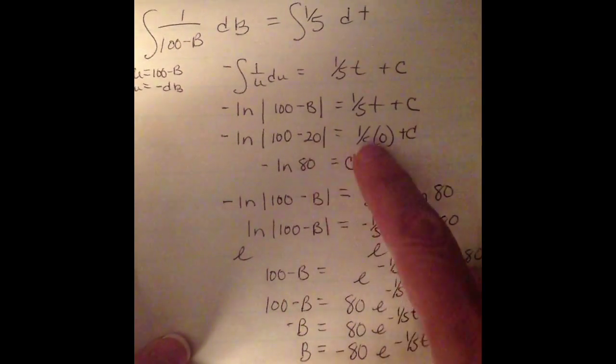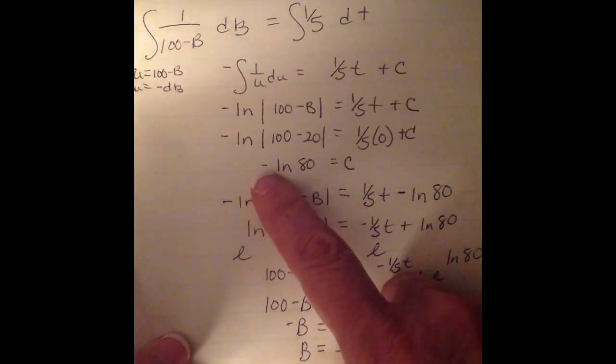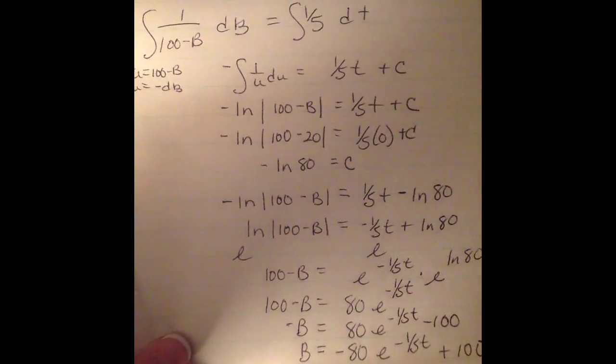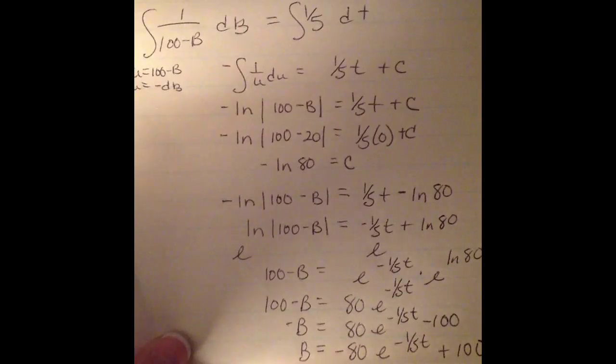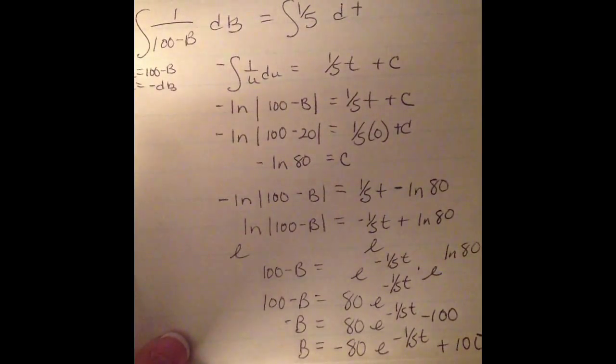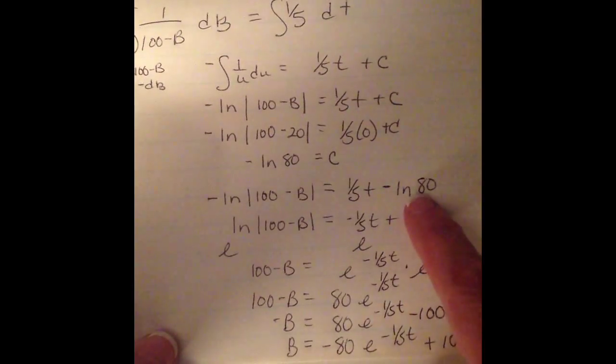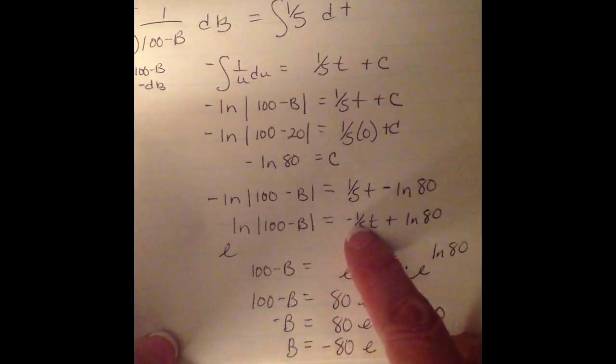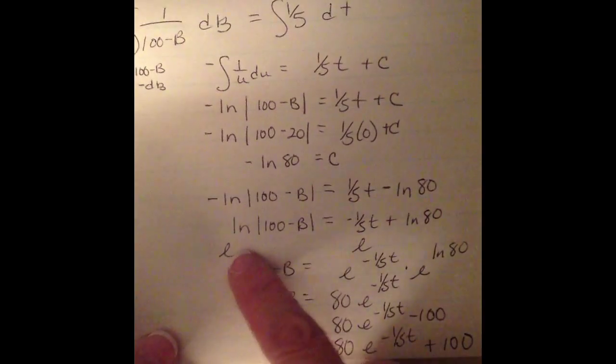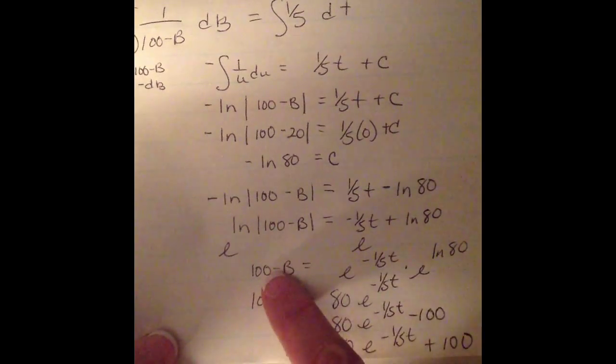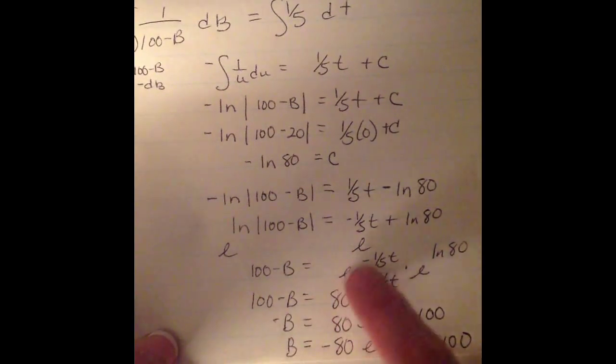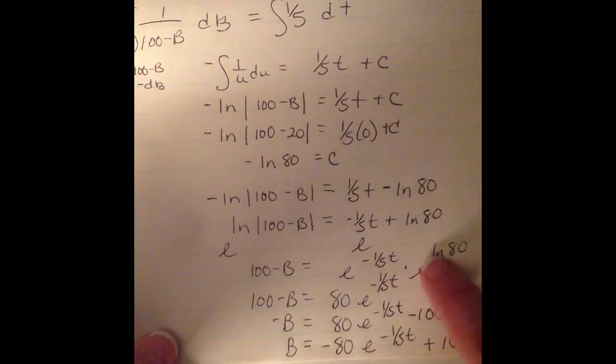I'm going to go on and substitute in to get my c. So my c is going to be -ln(80). Now this was on a non-calculator part. So you can leave it like that. So now I'm going to go back and substitute in for my c. Divide by the negative. Take the e of both sides. This will pop out. This will be this times e^(ln 80).